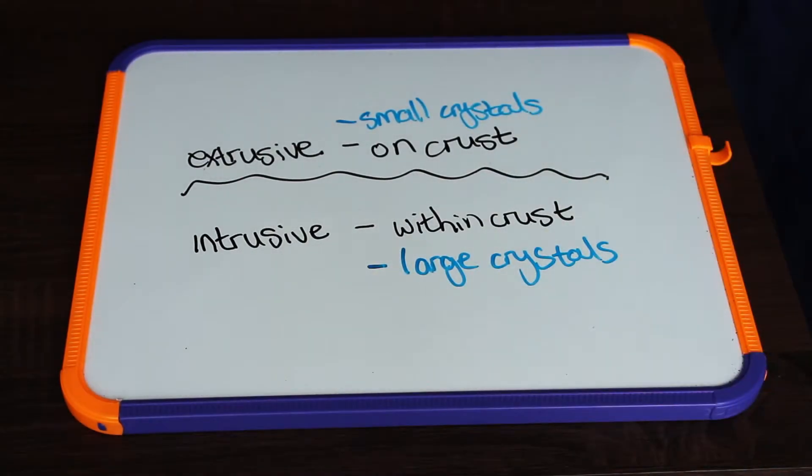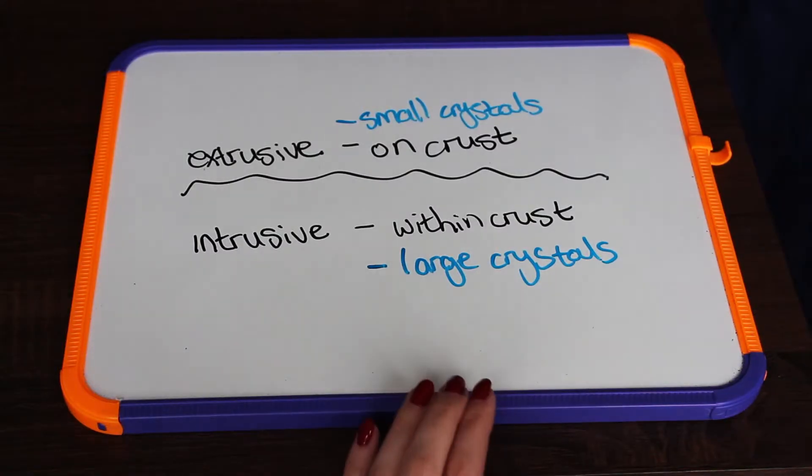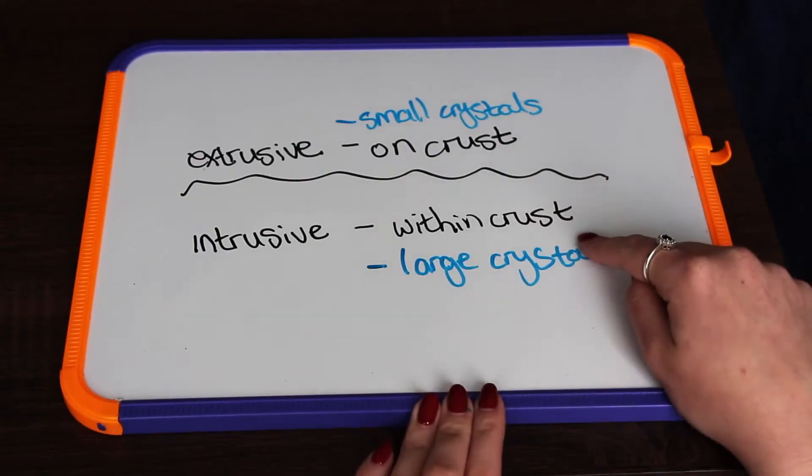Now there is quite a bit of science behind crystal formation, but basically there are minerals in magma and lava, and when magma and lava cool down, these minerals try to stabilize.